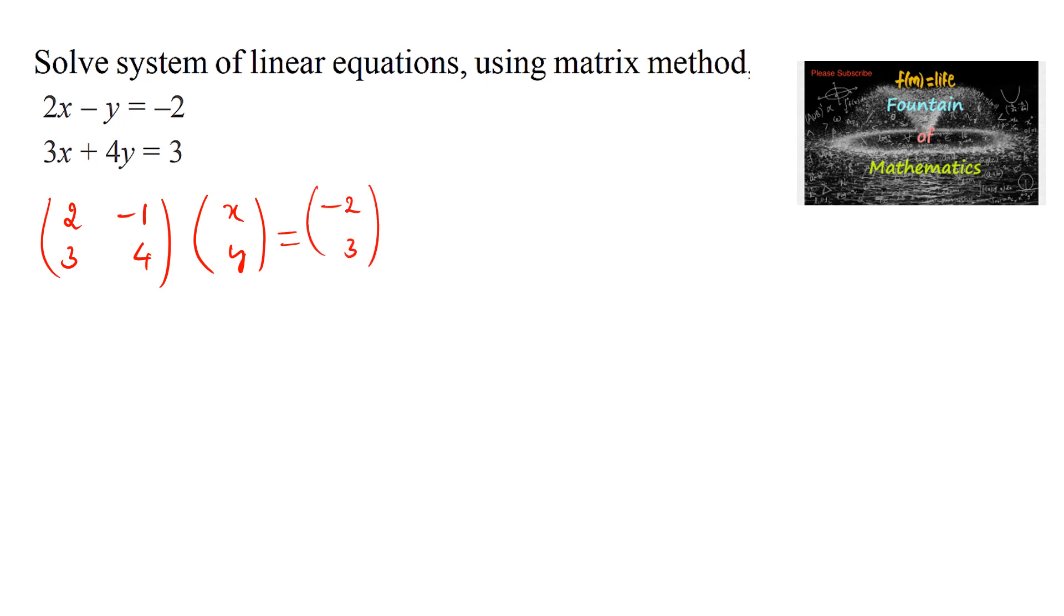We can write this matrix as A and the variable matrix as x is equal to B. We know that the system Ax is equal to B can be solved.